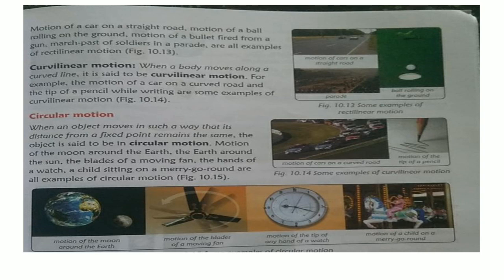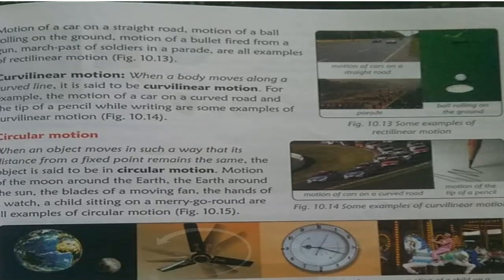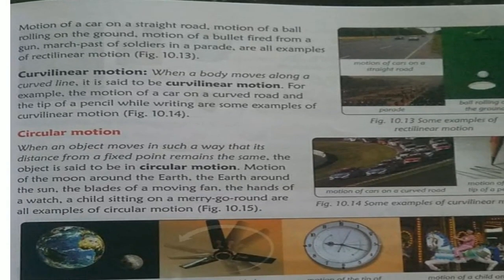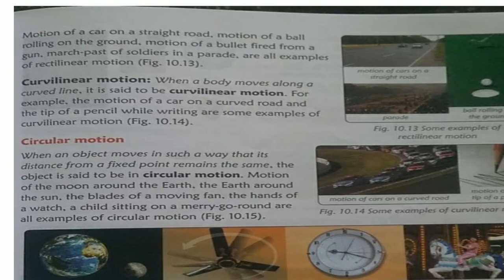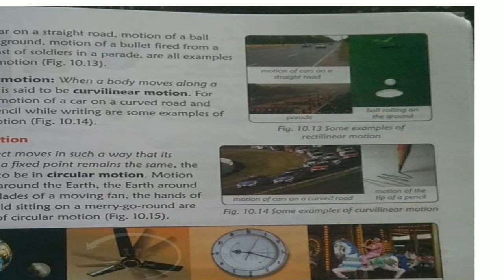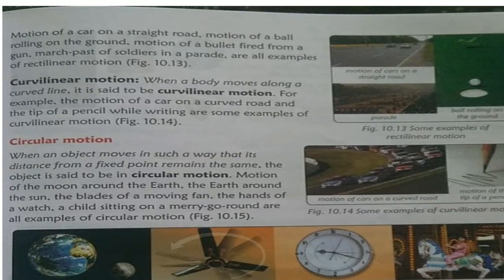Examples of rectilinear motion: motion of a car on a straight road — as you can see in the picture, the car moves along a straight path. Motion of a ball rolling on the ground also follows a straight path. Motion of a bullet fired from a gun, and the march past of soldiers in a parade are all examples of rectilinear motion.